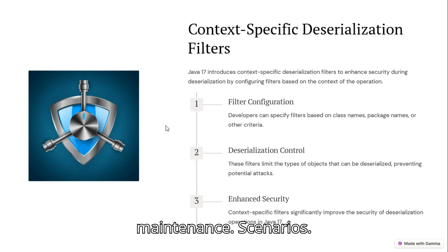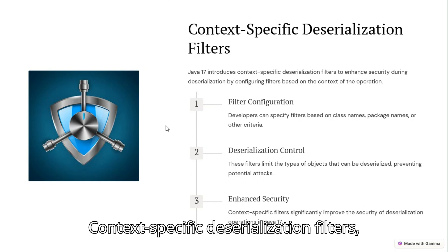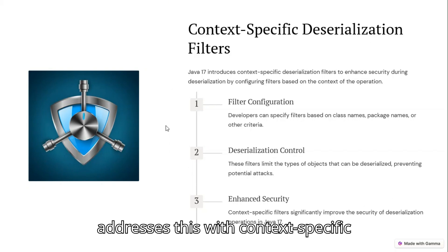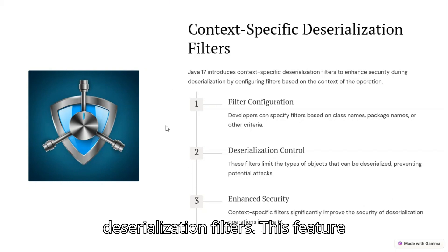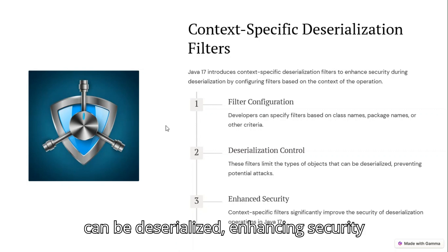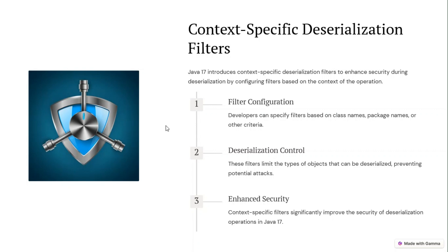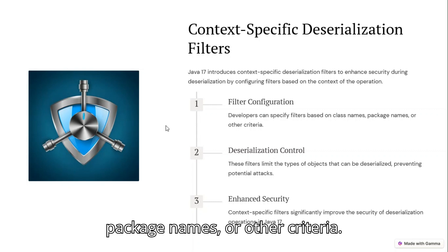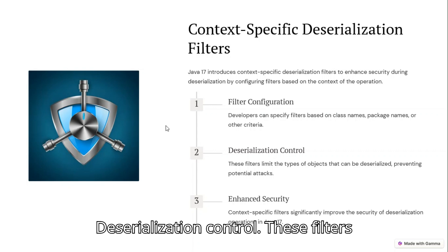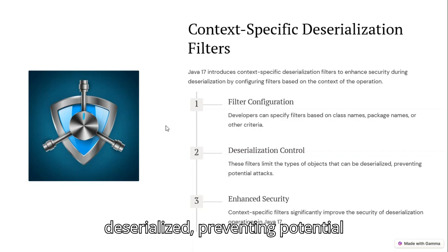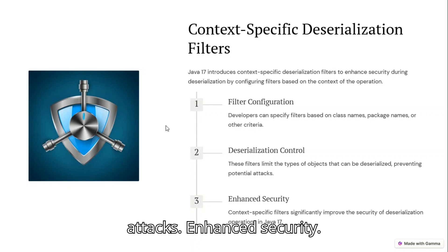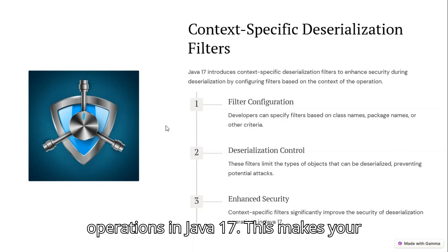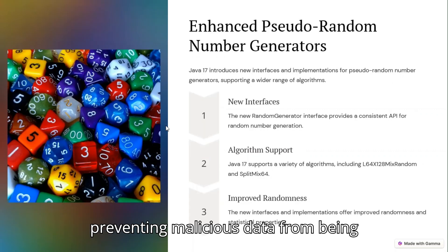Security is always a top priority, and Java 17 addresses this with context-specific deserialization filters. This feature helps in controlling what kind of data can be deserialized, enhancing security against deserialization vulnerabilities. Developers can specify filters based on class names, package names, or other criteria to limit the types of objects that can be deserialized, preventing potential attacks. Context-specific filters significantly improve the security of deserialization operations, making applications more robust by preventing malicious data from being deserialized.